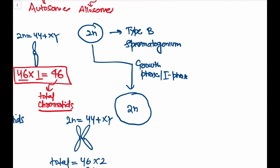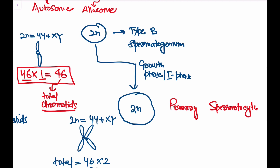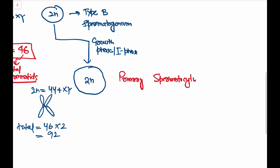This larger cell produced after the growth phase is called the primary spermatocyte. To recap: Type B spermatogonium entered the growth phase, duplicated its DNA and organelles, and became a primary spermatocyte. Initially there were 46 chromosomes with one chromatid each (46 total chromatids); now after DNA replication there are still 46 chromosomes but two chromatids each, giving 92 total chromatids. This primary spermatocyte then undergoes Meiosis I.